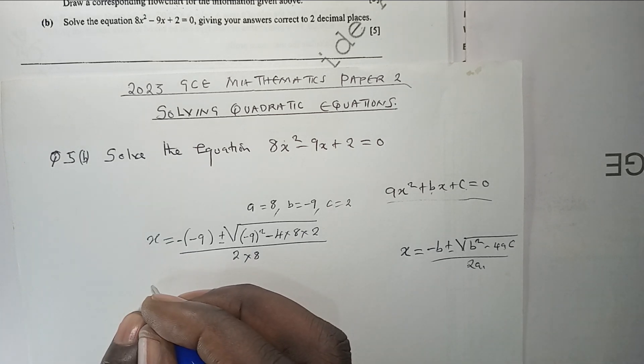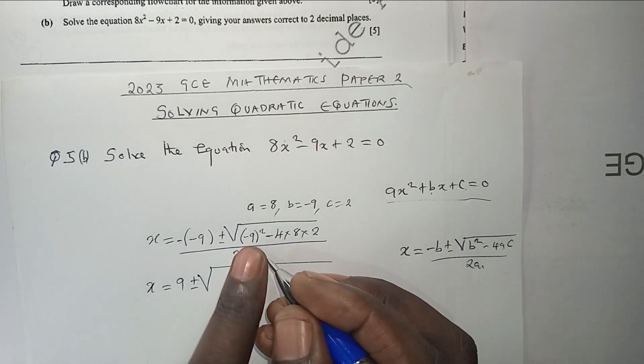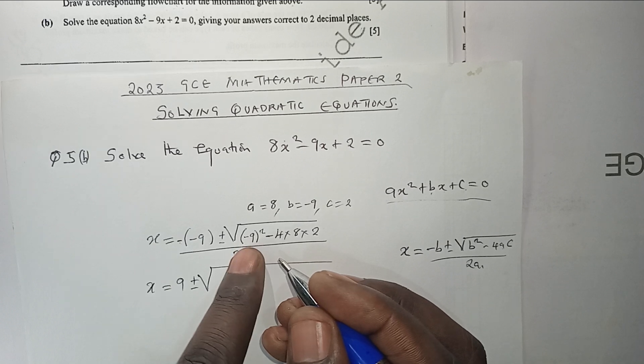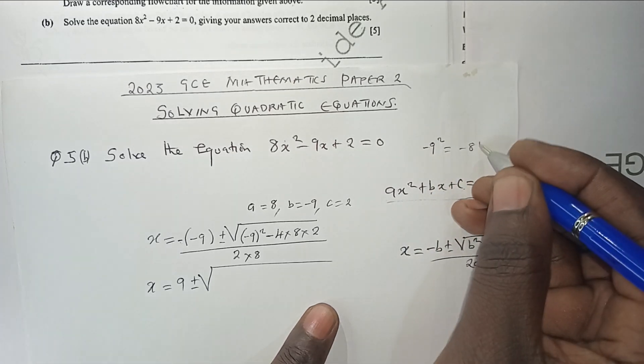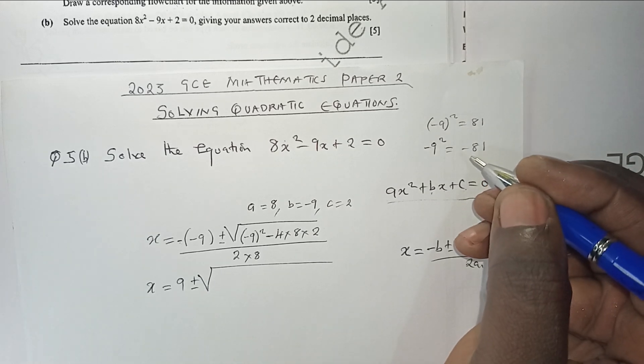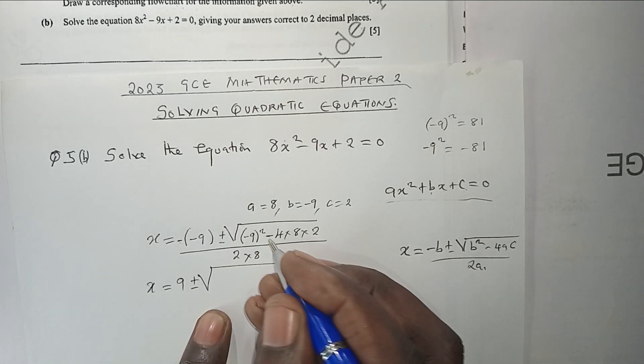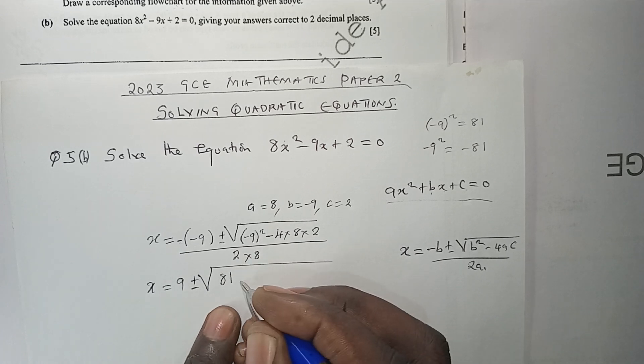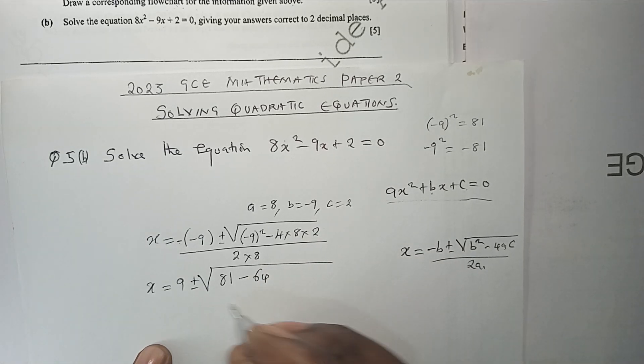I hope we are together. From there, we are going to say x is equal to the negative times negative gives us positive 9. Then plus or minus. It's important to put your b in brackets, especially if it has a negative. Because if you have, for instance, negative 9 squared, this gives you negative 81. But when you have negative 9 in brackets then squared, this gives you positive 81. So this is very important to show. So we are going to have what is negative 9 in brackets squared? This is going to give us 81. Then negative 4 times 8 times 2 is going to give us negative 64. From there, we can say everything shall be over 2 by 8 gives us 16.